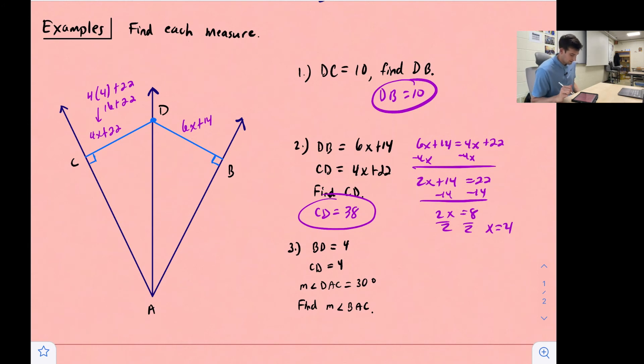Okay, and our last question says BD is equal to 4, CD is equal to 4. So that's basically just telling us these two sides or those two distances are the same, which means point D lies on our angle bisector. So now it says angle DAC, so this angle right here is 30 degrees, and we want to find the measure of angle BAC, which is the entire angle there.